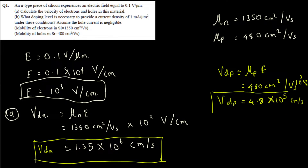So that completes Part A. The velocity of electrons is vdn = 1.35 × 10⁶ cm/s, and the velocity of holes is vdp = 4.8 × 10⁵ cm/s. You simply use μn for electrons and μp for holes, with the same electric field for both.